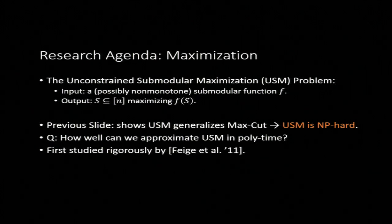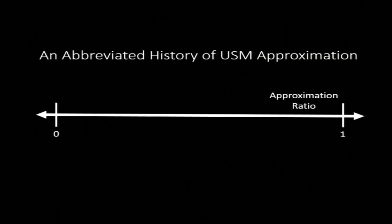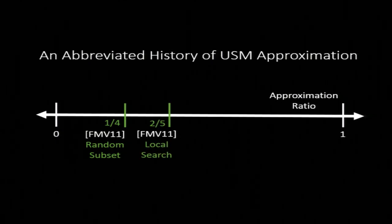This question was first asked by Feige et al in 2011. Let's see what results they got. Here's a number line of all the possible approximation ratios we could hope for. We know that one's not possible because we can't hope to solve the problem exactly. The first result that Feige et al showed in 2011 is that if you just pick a uniform random subset of these n elements, then you're going to get a one quarter approximation to the best possible subset of those n elements. They also show that you could do a little bit more work - you can conduct a noisy local search and that would bump up your approximation ratio to 0.4.